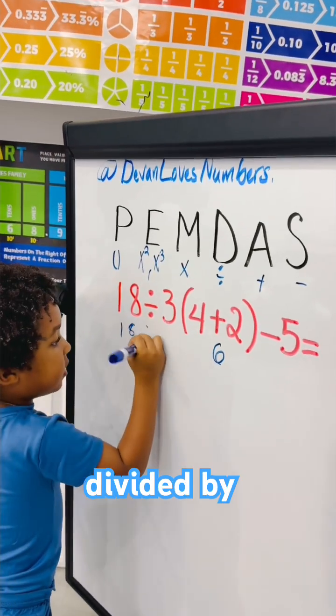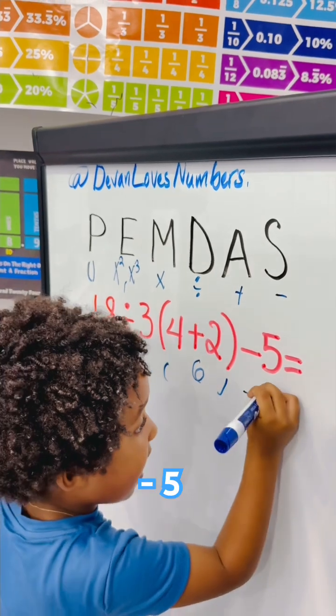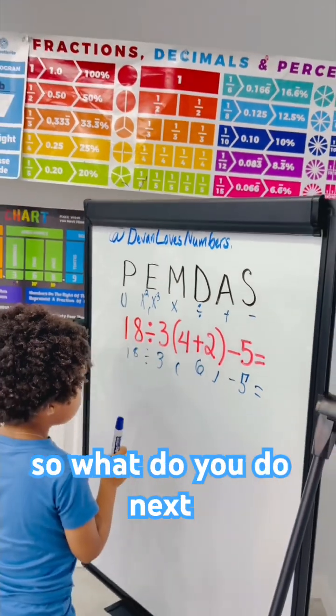Eighteen divided by three times six minus five equals... Okay, so what do you do next?